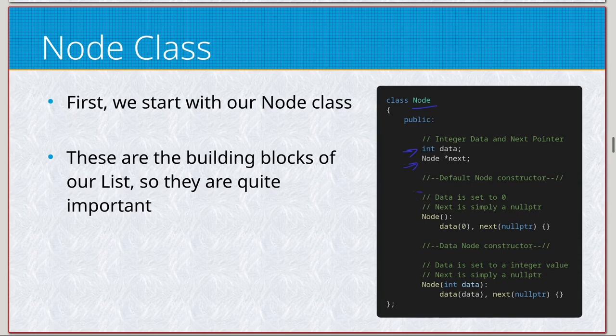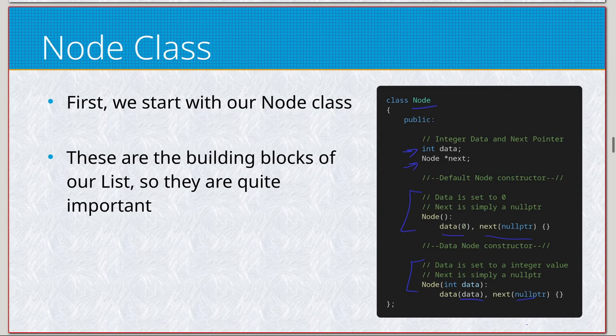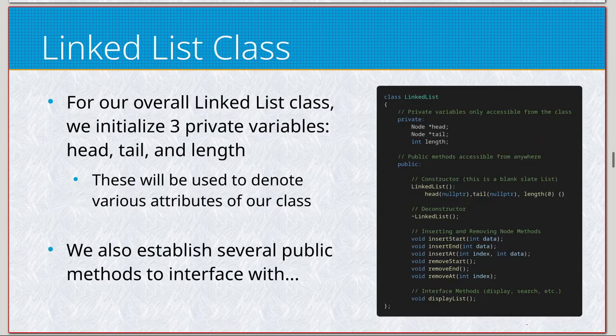We have a data type of integer and a pointer for our next — so this will be a singly linked list. We have a default constructor where data is set to zero and next is set to null. We also have a parameterized constructor so that if we want to specify the data in the node we can — for example, node(7) would create an integer of 7 with a null pointer.